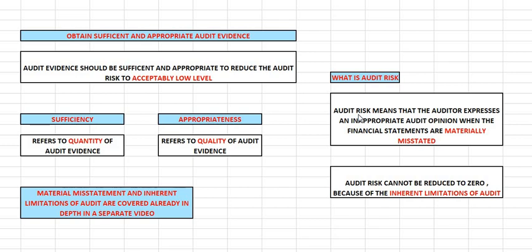So basically, audit risk means the auditor expresses an inappropriate audit opinion when the financial statements are materially misstated. Audit risk cannot be reduced to zero because of the inherent limitation of audit. Therefore, obtaining sufficient and appropriate audit evidence means audit evidence should be sufficient and appropriate to reduce audit risk to an acceptably low level. Sufficient means quantity of audit evidence; appropriate means quality of audit evidence.